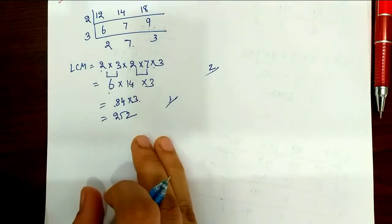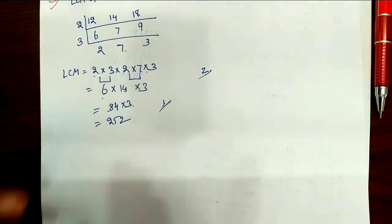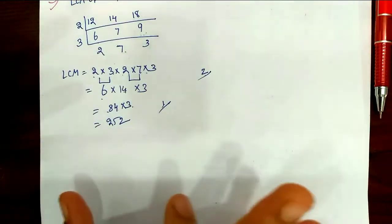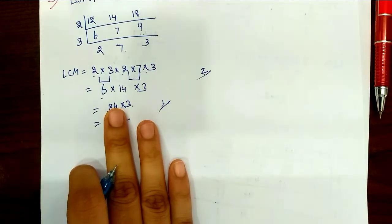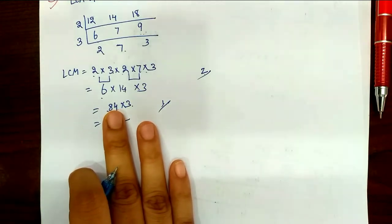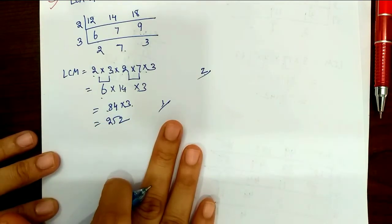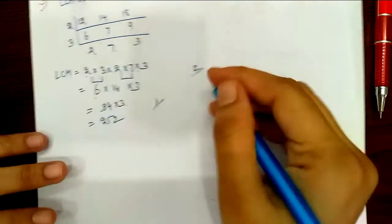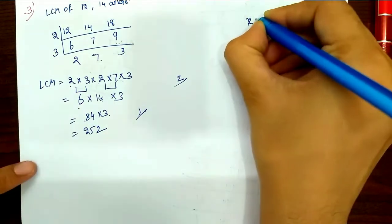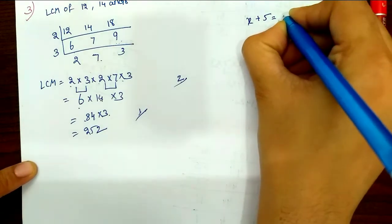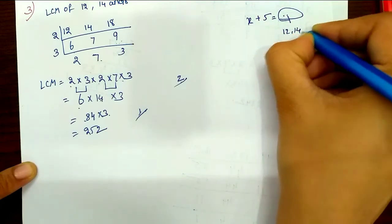So 252 is the LCM. To verify: when you divide 252 by 12, 14 and 18, the remainder is 0. Now we need the smallest number such that when we add 5, it is divisible by 12, 14 and 18.